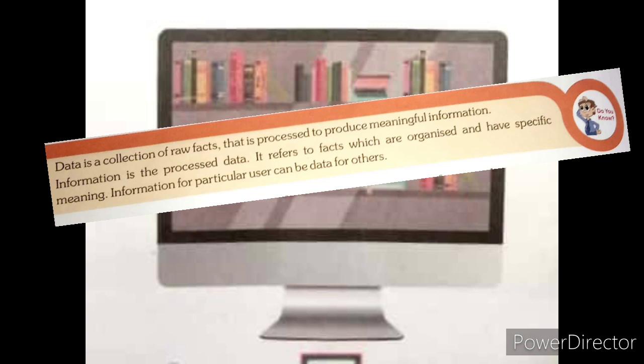Now, what is data? Data is a collection of raw facts that is processed to produce meaningful information. Now what is information? Information is the processed data. It refers to facts which are organized and have specific meaning.